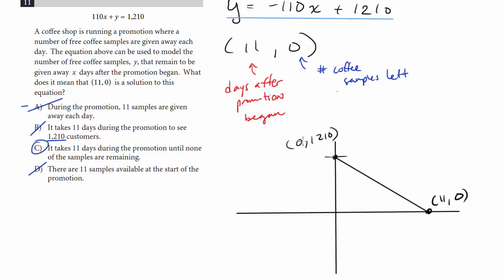First things first, this y-intercept, what does it mean? Well, on day zero, in other words, before we've begun giving out any coffee at all, this y represents the number of coffee samples left. So this is, like we said in the previous video, it's the starting amount. We are beginning this promotion with 1,210 coffee samples. And that's kind of what they're trying to make you think here, like it's 1,210 customers, but it's really coffee samples. But nothing to do with what's going on in this problem, right? It's really for the starting point. At zero days, you have 1,210 coffee samples to give out. So this is the number of coffee samples you're starting with.